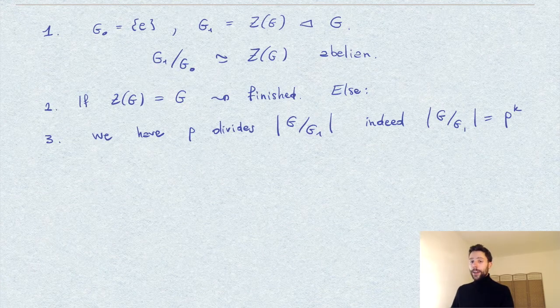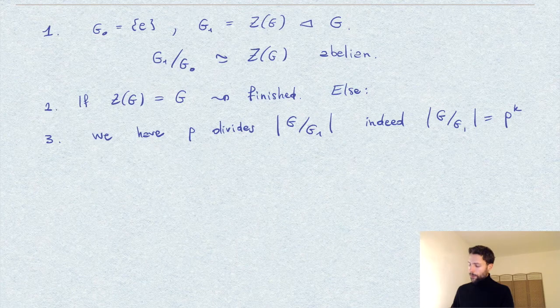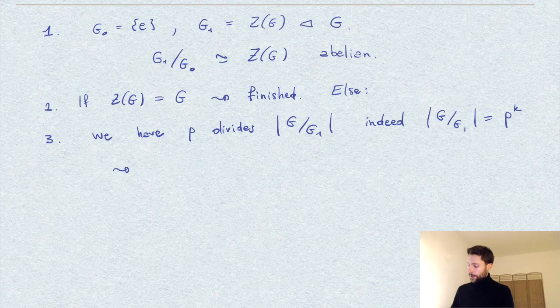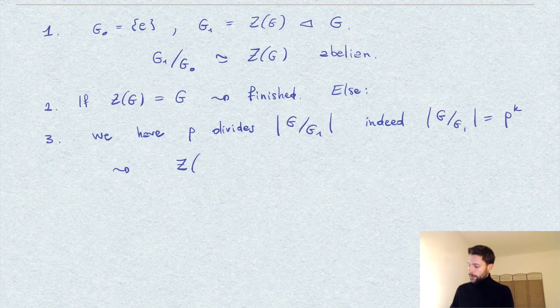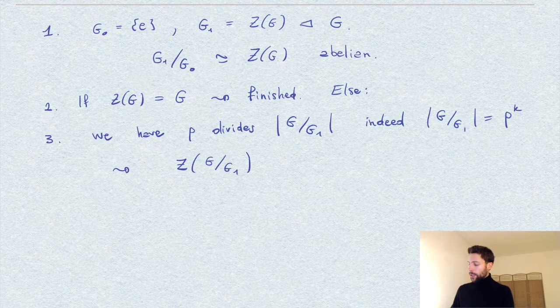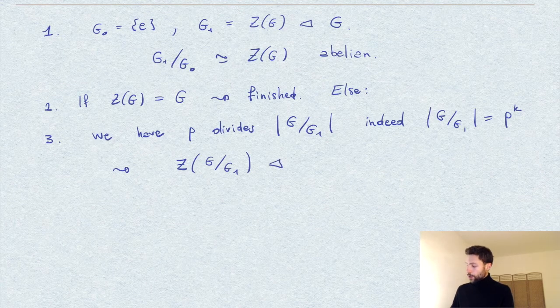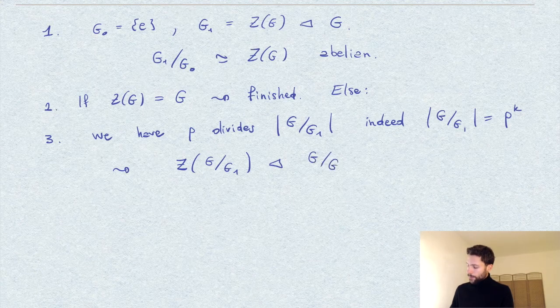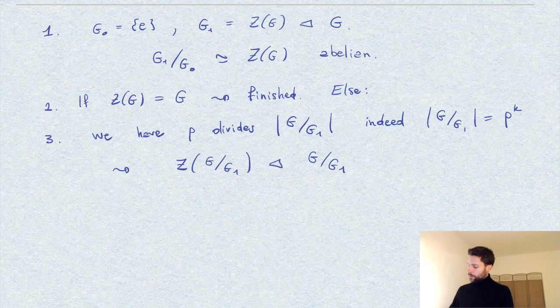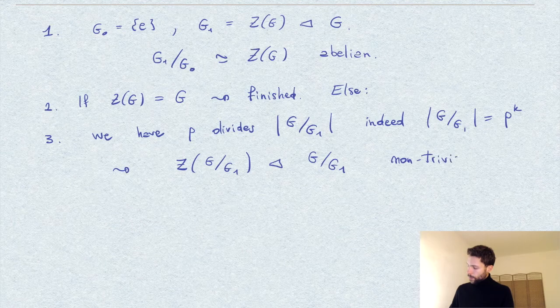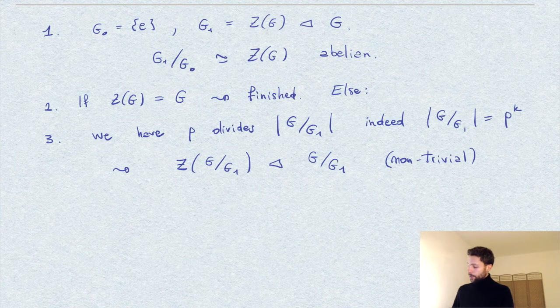So we can apply again our observation, and we have that this quotient group has a non-trivial center. So we consider the center of G over G_1, and we know that this is an abelian and normal, non-trivial subgroup of G over G_1, again by our main observation above.